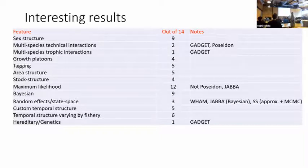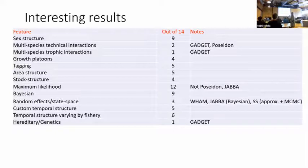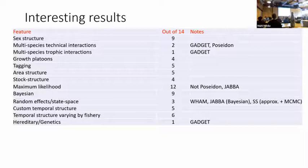Only two have multi-species technical interactions — that was gadget and Poseidon; you can add SEAPODYM in there too. Growth platoons — there are only four models that had that. There's tagging, area structure, stock structure. Most of them use maximum likelihood, but Poseidon and JABBA are different — one's agent-based and one's fully Bayesian. Only three have random effects: WHAM, JABBA, and Stock Synthesis. For Stock Synthesis there are approximate methods that papers have used. Any model using MCMC, Bayesian, or penalized likelihood can have random effects; there are just complications in estimating the variance in maximum likelihood.